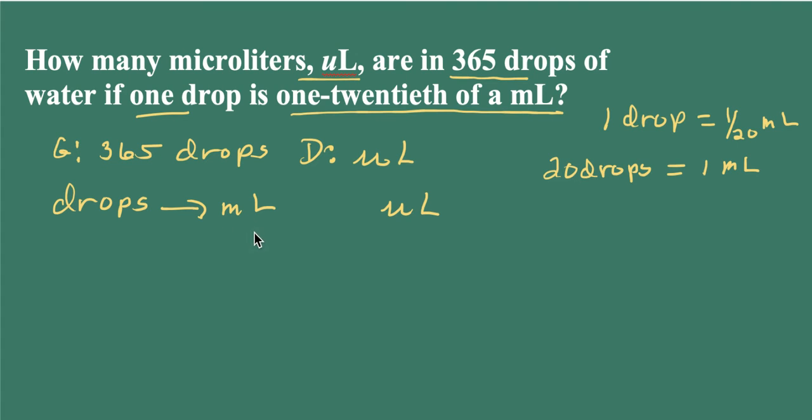So now I have to figure out, well, what do I know about milliliters and microliters? Well, I know that one milliliter contains 1,000 microliters. So I can go from milliliters to microliters. So I have my roadmap. I have my two equivalences.